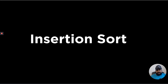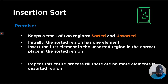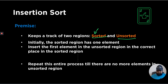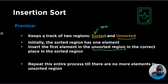Let's discuss our last basic sorting algorithm, which is called insertion sort. The idea behind insertion sort is that we keep track of two different regions. The first one is sorted and the other one is unsorted. We repeatedly take out the first element from the unsorted region and place it in its correct order in the sorted region. We repeatedly do this process till all elements in the unsorted region move to the sorted region.